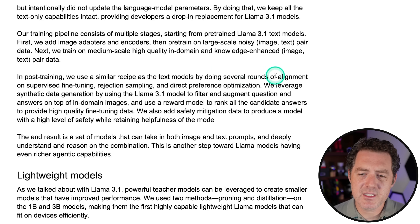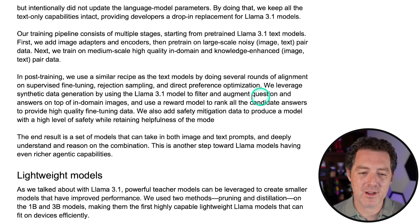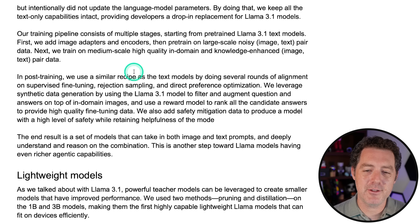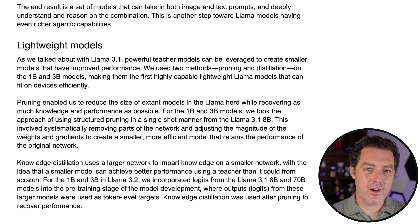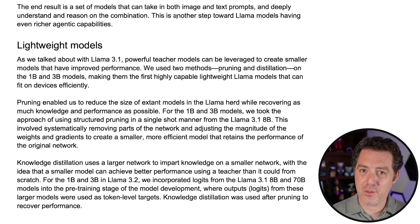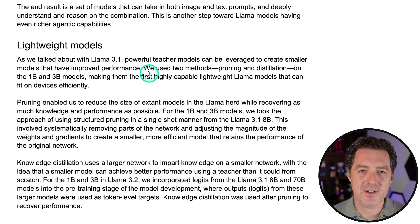In post-training, they did several rounds of alignment: supervised fine-tuning, rejection sampling, and direct preference optimization (DPO). They leveraged synthetic data generation using the Llama 3.1 model to filter and augment question-and-answer pairs on top of in-domain images. They also used Llama 3.1 as a teacher model to train the smaller versions, applying pruning and distillation on the 1B and 3B models — making them the first highly capable lightweight Llama models that can fit on devices efficiently.